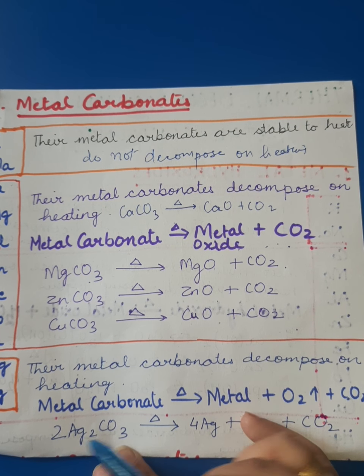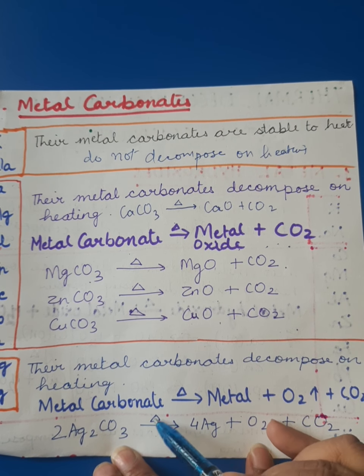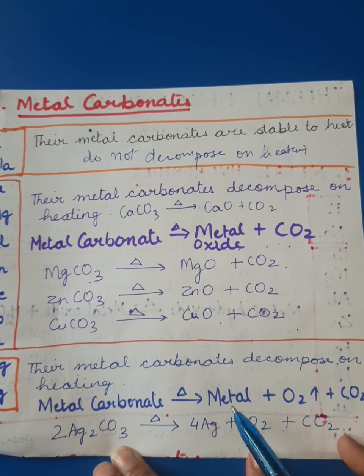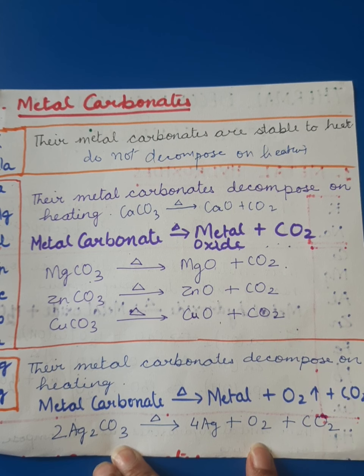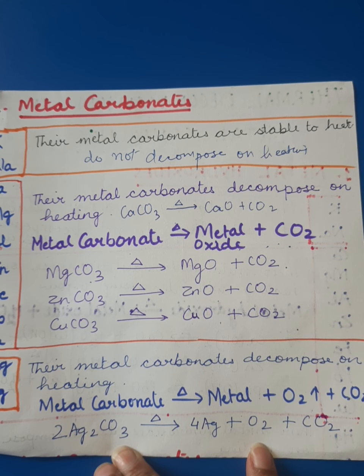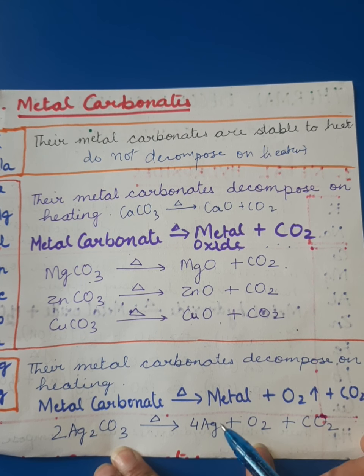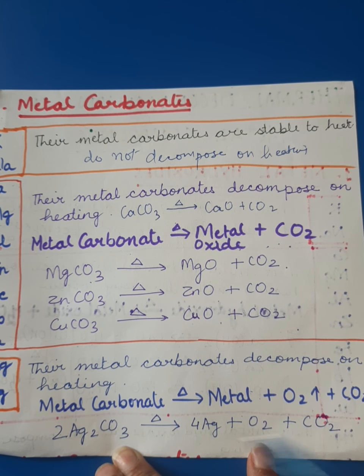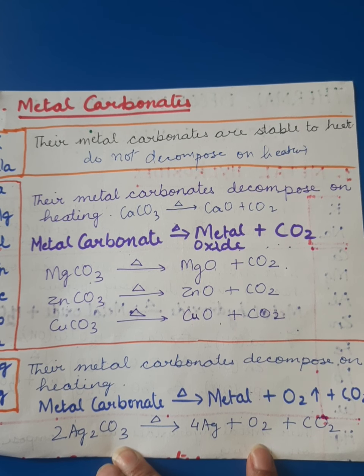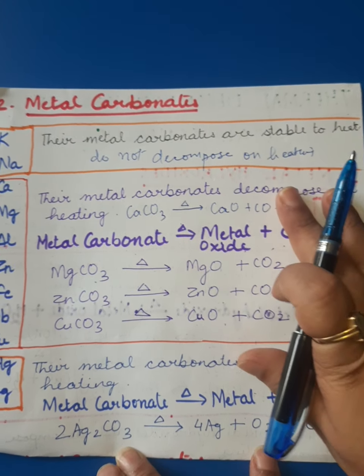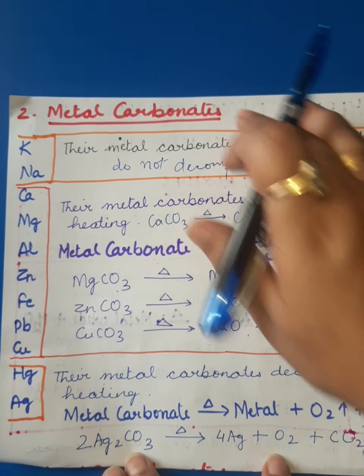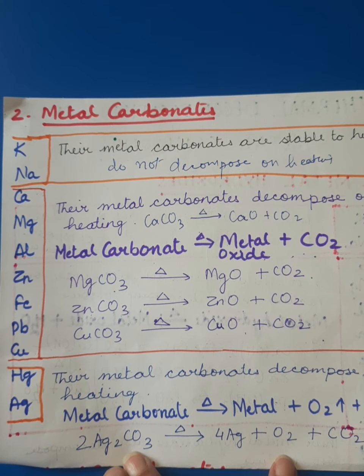For the third category — silver and mercury — their metal carbonates decompose into metal, oxygen, and carbon dioxide. For example, silver carbonate on heating decomposes into silver, oxygen, and carbon dioxide, then you balance the equation.